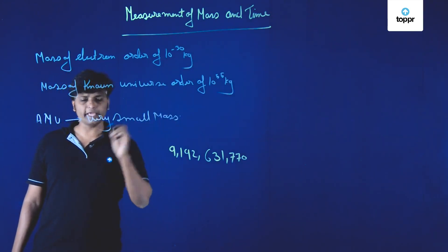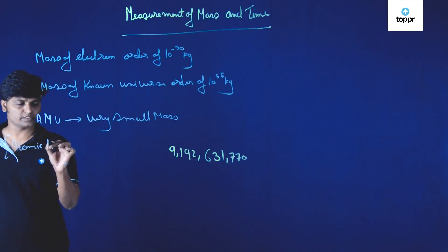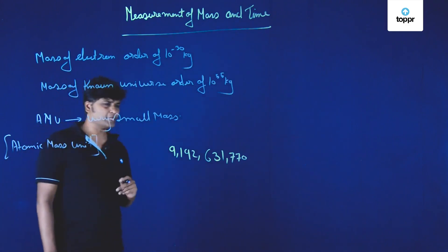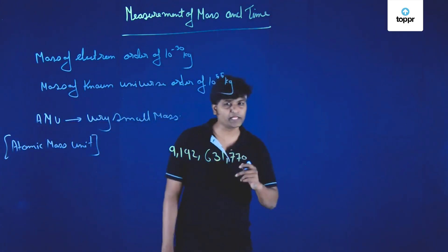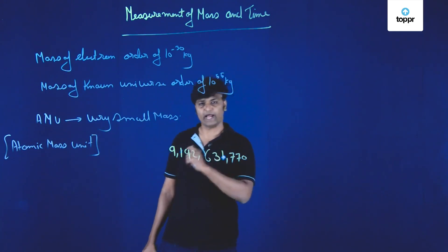Now AMU is called atomic mass unit. So what is 1 AMU? 1 AMU is one twelfth of the mass of carbon 12 atom.